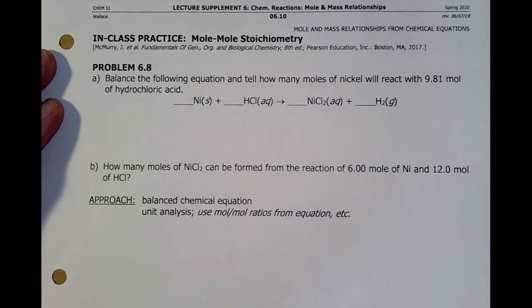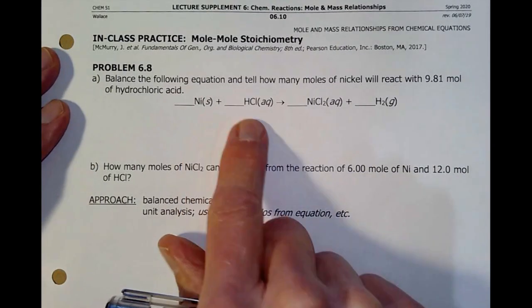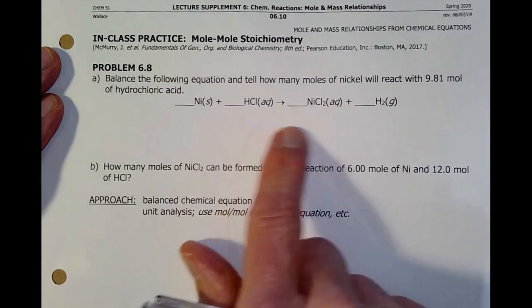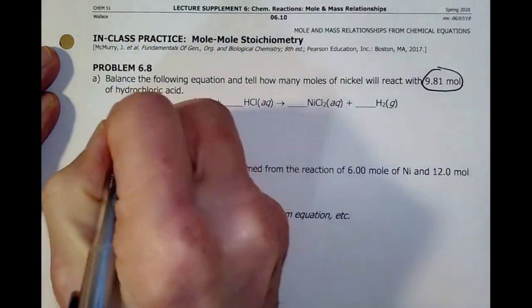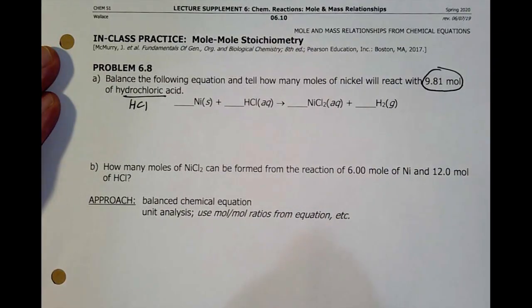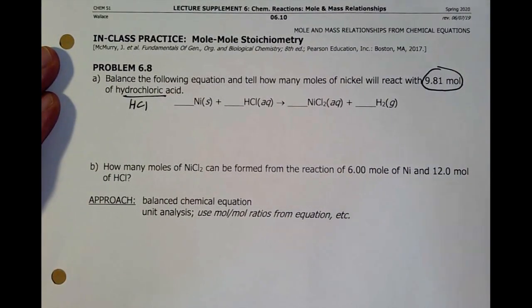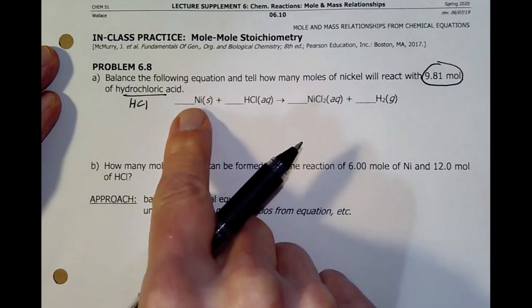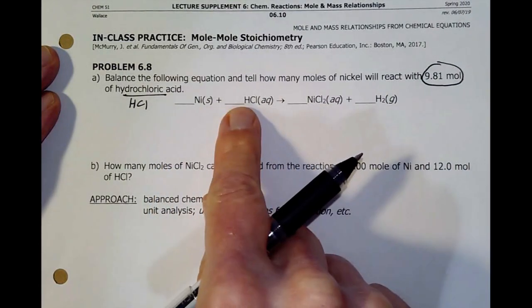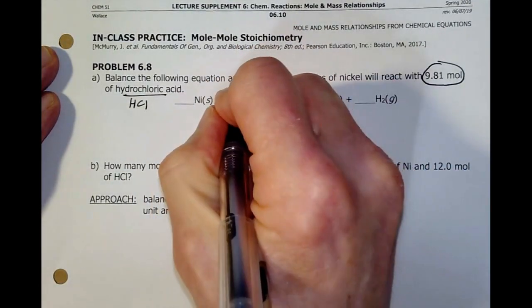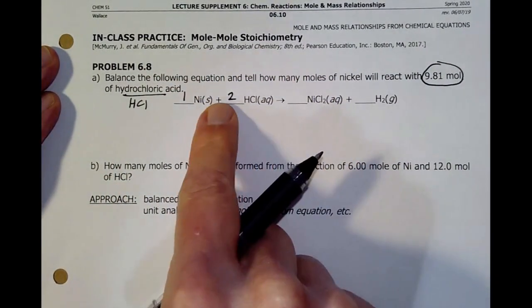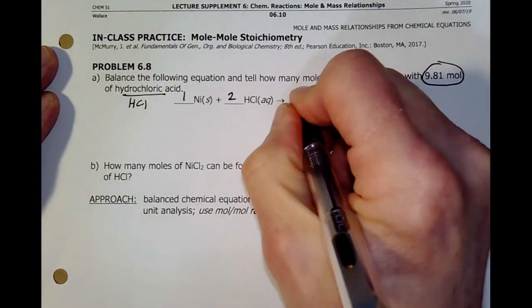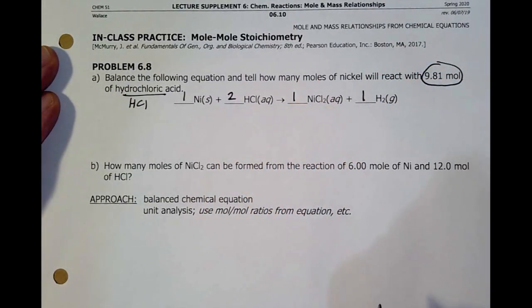Okay. Here I've got nickel reacting with HCl, hydrochloric acid, to give me nickel 2 chloride and hydrogen gas, fizzing. And it says, okay, I'm going to react 9.81 moles of HCl. Well, I can't go anywhere until I get this balanced. Luckily, this is pretty easy to balance. One nickel, one nickel, one hydrogen, two hydrogen atoms. So, probably put that there. I'll go back and put that. Two HCl's, two Cl's, two Cl's, bingo, we're done.